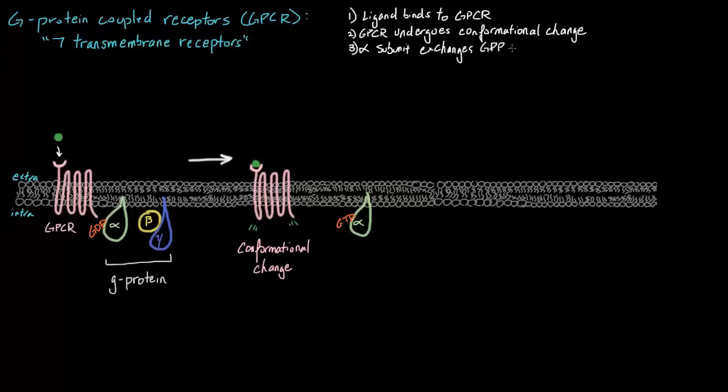Instead of GDP, we have GTP. Now, because we have GTP bound to this alpha subunit, it'll now cause our alpha subunit to dissociate and move away from our beta and gamma subunit.